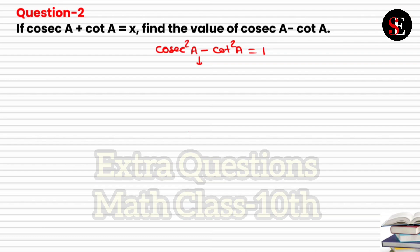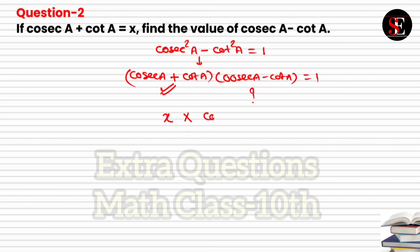Using the identity, we simplify: (cosec A + cot A)(cosec A − cot A) = 1. Since cosec A + cot A = x, we get x × (cosec A − cot A) = 1. Therefore, cosec A − cot A = 1/x, and that is the answer.